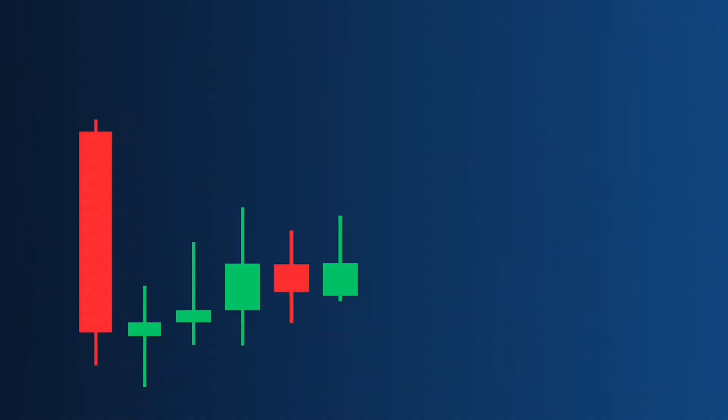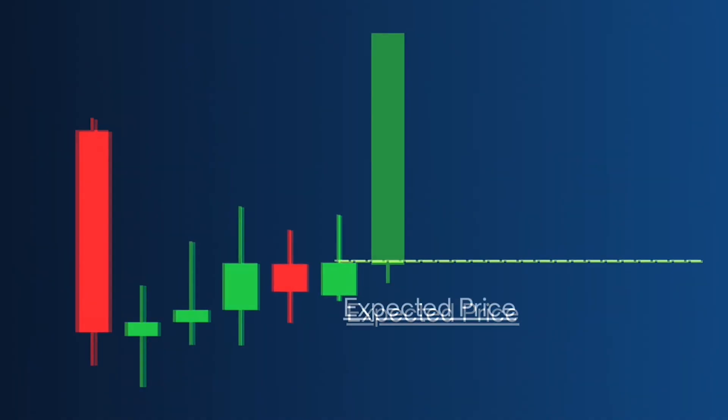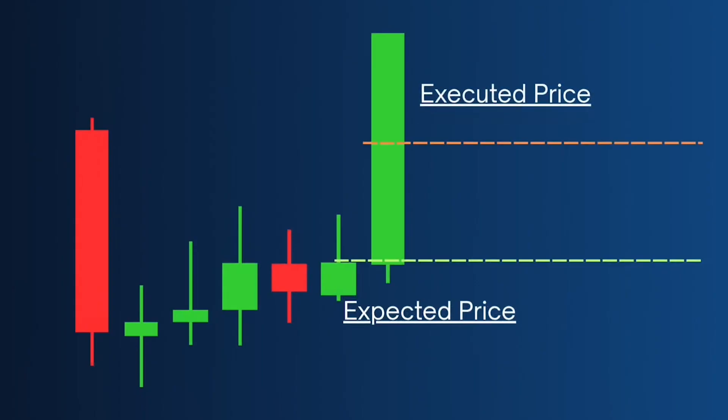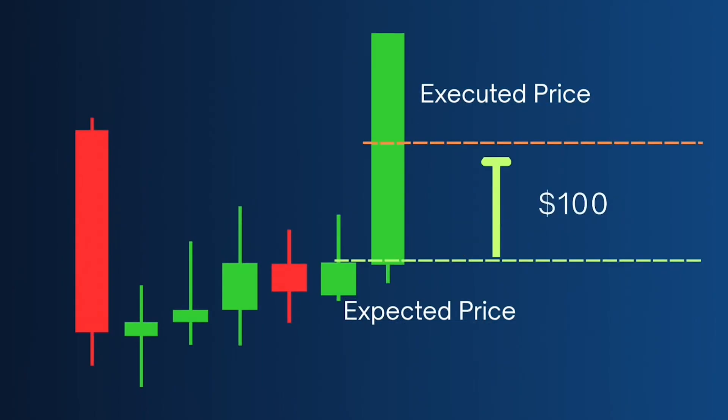And that brings us to the example traders deal with all the time: slippage. Slippage is when you click buy or sell expecting one price and you get filled at another. Most of the time it comes from liquidity, volatility, routing — things you cannot control — but your hardware and internet can make it worse. It won't eliminate slippage, but having the right setup stops your side from making it worse.